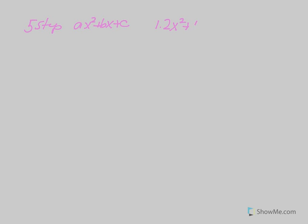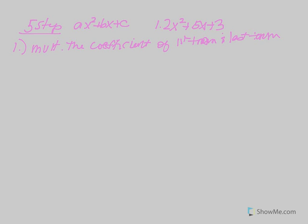For the first example, we have 2x² + 5x + 3. In the five-step method, step one is to multiply the coefficient of the first term and the last term — you're multiplying a times c together. So in this case, we're taking 2 times 3, which creates a new product of 6.